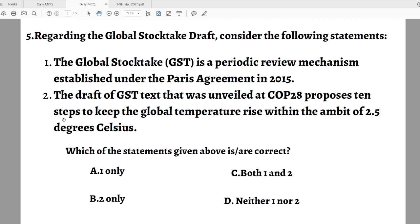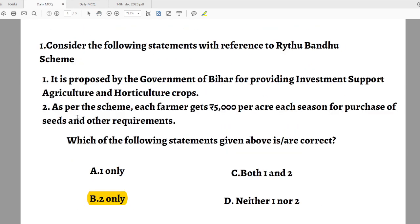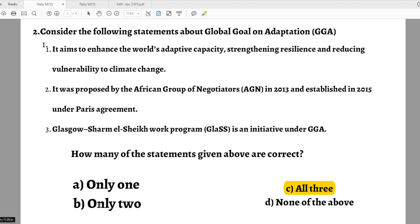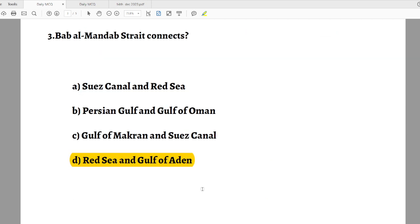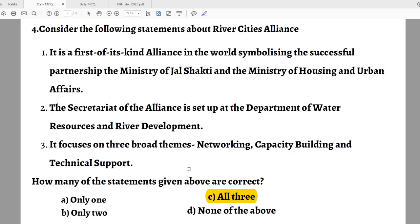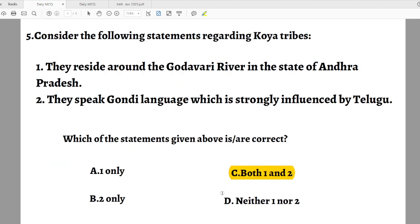Now we will see the answers for the previous day. First question answer is B related to Raitu Bandhu scheme. Question 2 answer is C. Question 3 answer is D. Question 4 answer is C. Question 5 answer is C. That's all about the current affairs and MCQ. Thanks a lot for joining us.